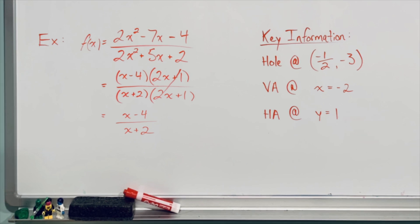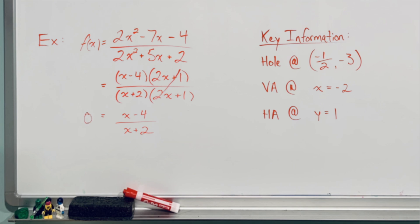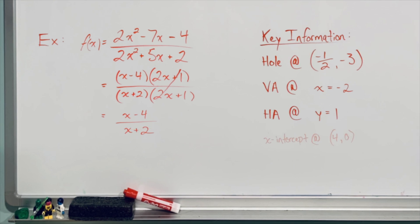Our x-intercept can of course be found by letting the function equal 0 and solving for x. To make things simple, you can just let the numerator equal 0. Placing 4 in the numerator would result in 0, making our x-intercept at 4, 0. Subbing 0 in for x will provide us with the coordinates of the y-intercept, and in this case that is 0, negative 2.